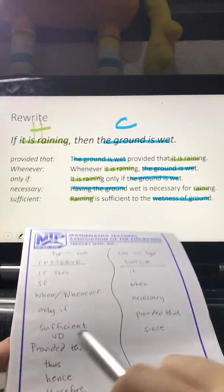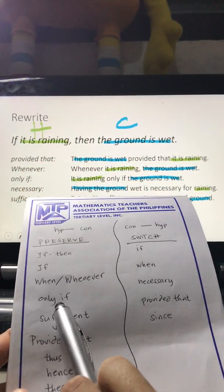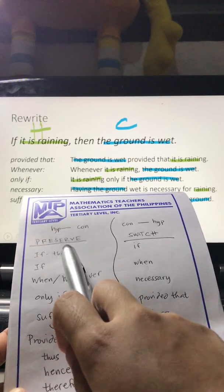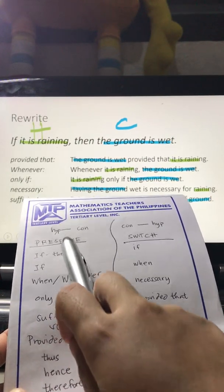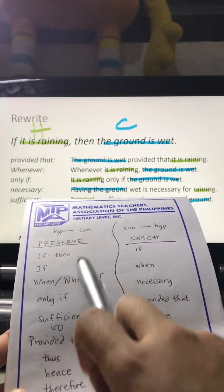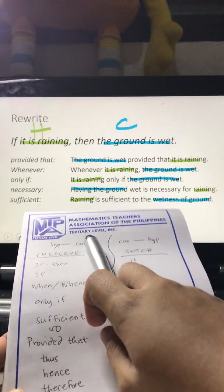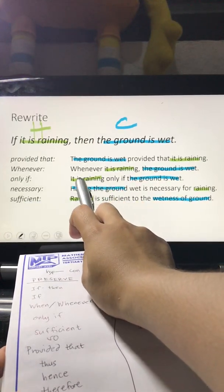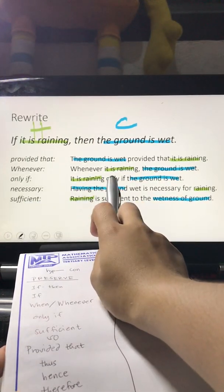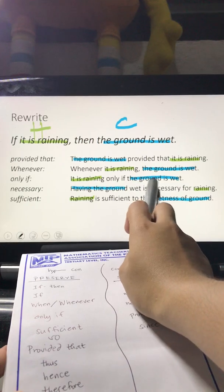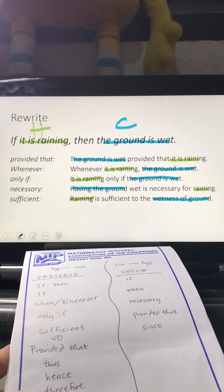Next is 'only if,' which is under preserve. So the pattern is: hypothesis only if conclusion — green hypothesis, then 'only if,' then blue conclusion.